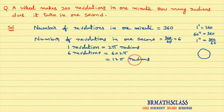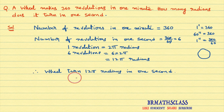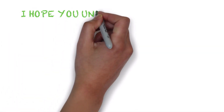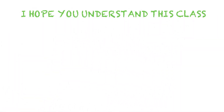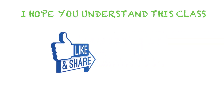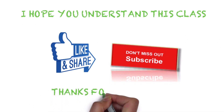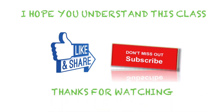So what is the final conclusion? The wheel makes how many radians in one second? Therefore, the wheel turns 12π radians in one second. I hope you understand this class. If you like this video, please share it with your friends. If you are not yet subscribed to my YouTube channel, subscribe now. Thanks for watching. Have a great day. Bye bye.